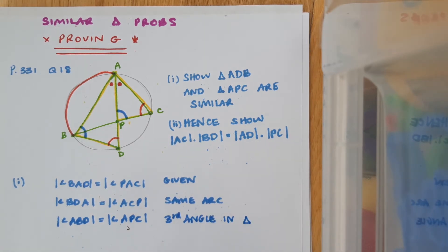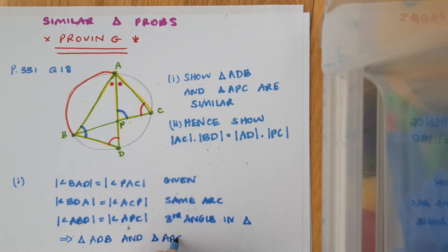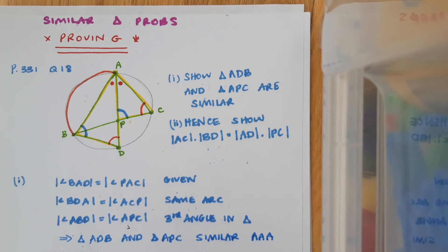Since I've managed to match up every angle in triangle ADB with an angle in triangle ABC, I can say that implies that triangle ADB and triangle APC are similar, and my reason is AAA. So that's part one of the question completed.